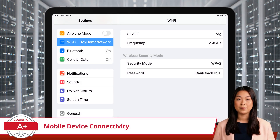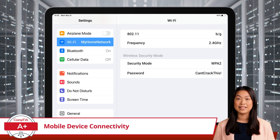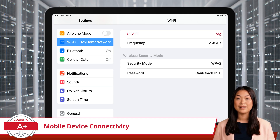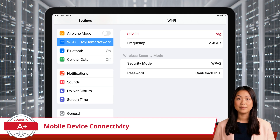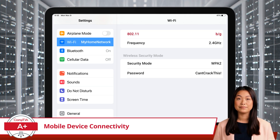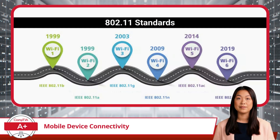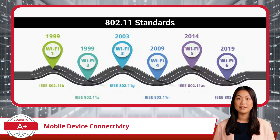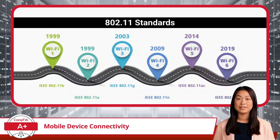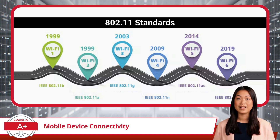Additionally, Wi-Fi networks operate using a variety of 802.11 standards, which determine the speed, range, and frequency band of the connection. Some of the most common standards include 802.11b, 802.11a, 802.11g, 802.11n, 802.11ac, and 802.11ax.